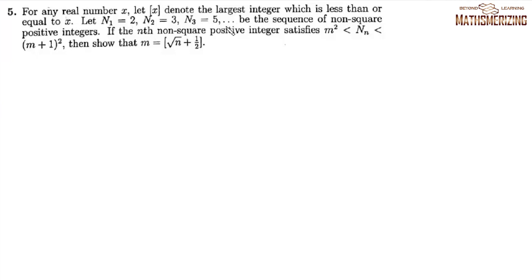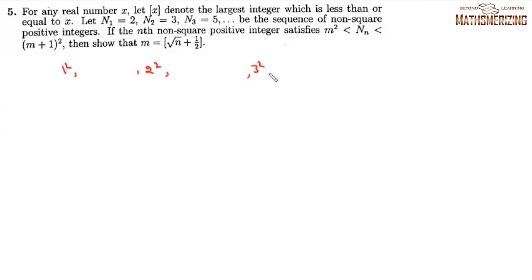Question 5: Let n₁ = 2, n₂ = 3, n₃ = 5 be the sequence of non-square positive integers. If the nth non-square positive integer satisfies m² < n_n < (m+1)², show that m = ⌊√n + 1/2⌋. Between 1² and 2² we have 2 non-square numbers: {2, 3}. Between 2² and 3² we have four: {5, 6, 7, 8}.